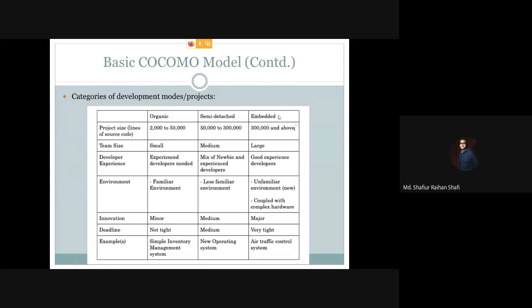Lastly, the embedded system refers to a very complex system where a lot of innovative steps are needed during development. The development team is large and very much experienced. The project size for embedded systems is above 300 KLOC. The team consists of experienced developers who have worked on similar embedded systems, since this type of system is new and innovative.